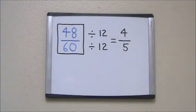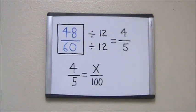Now since 5 is divisible by 100, we're going to create a proportion. We want to find a fraction that's equivalent to 4 fifths with a denominator of 100.